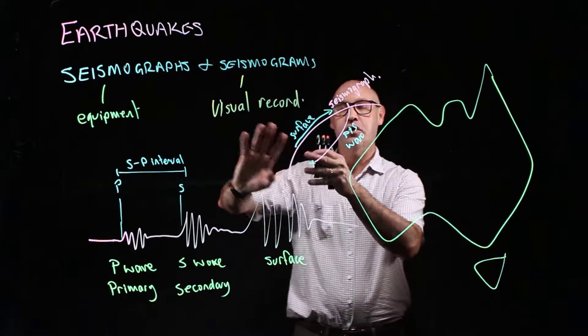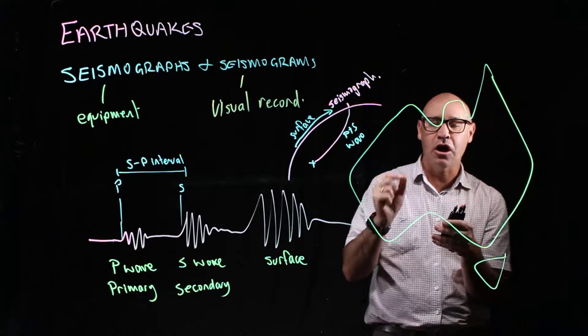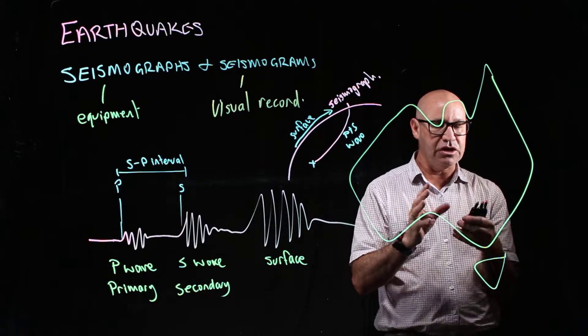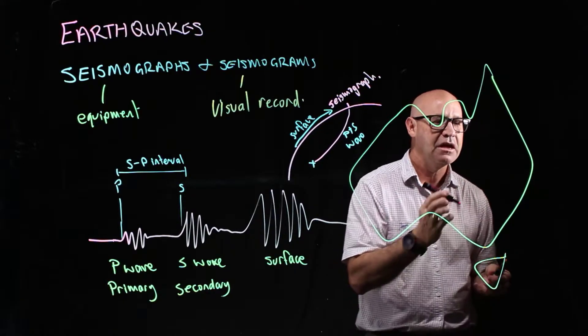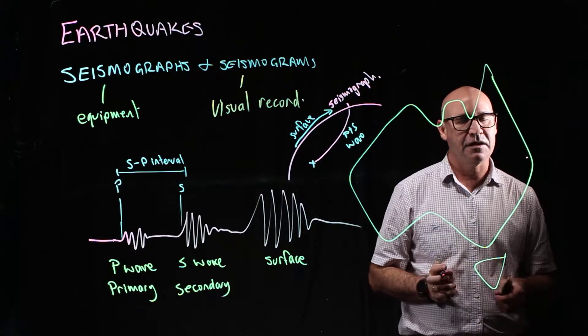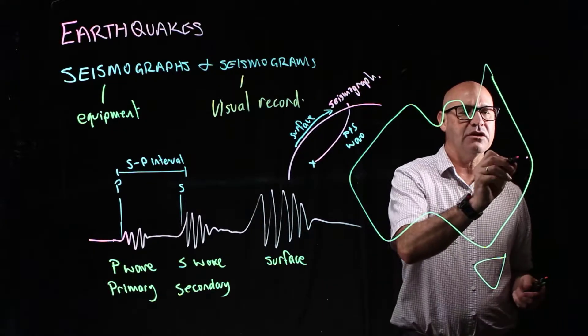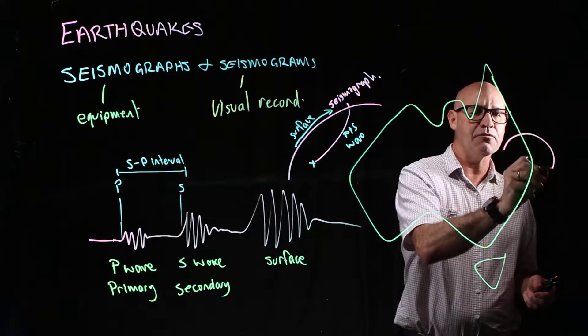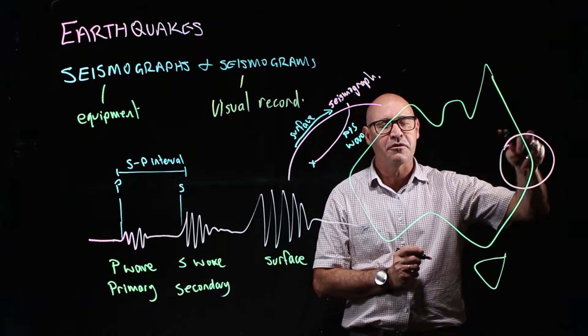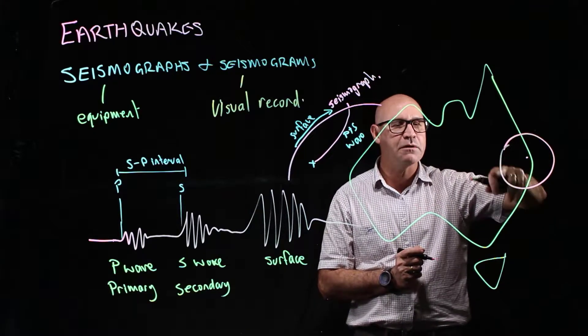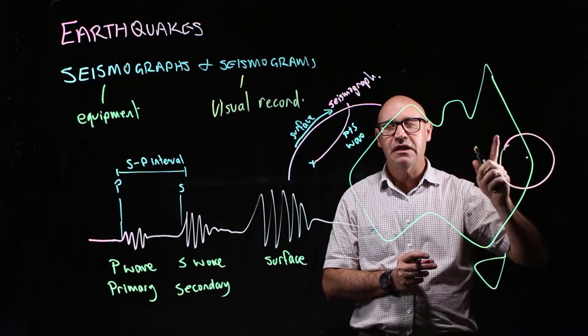But if you've only got the trace from one seismogram, then that can only tell you that the epicenter can be somewhere around a particular circle. Let me show you what I mean. So let's say it was detected in Brisbane and the epicenter was 300 kilometers away from that station. Well, it's anywhere around a circle of 300 kilometers away from Brisbane. The epicenter could be anywhere around there. So one seismogram is not enough.